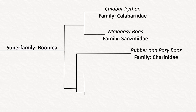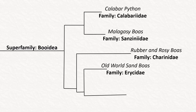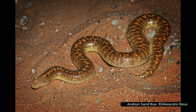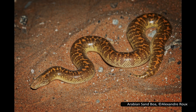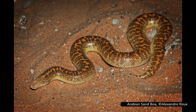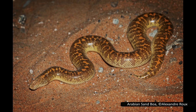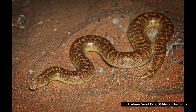The next family of boas is Erycidae, which contains one genus with 13 species — also known as the Old World sand boas. Older classifications include the rosy and rubber boas here as well. They have no distinct neck, a short tail, and a very cylindrical body. As the name suggests, these boas are found throughout the Old World: Europe, Africa, and Asia.